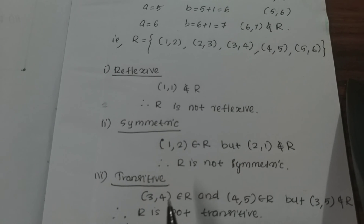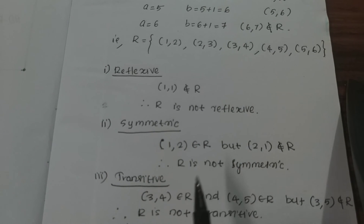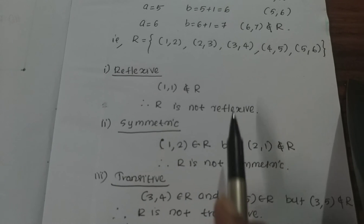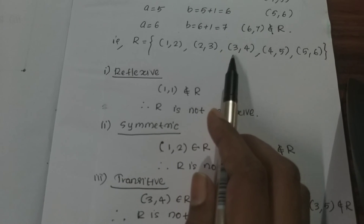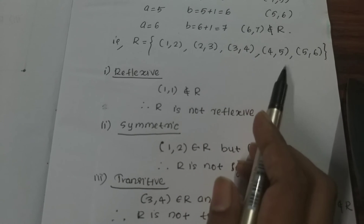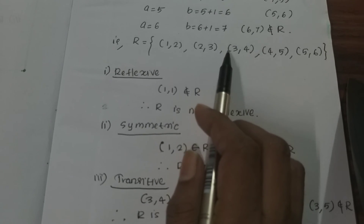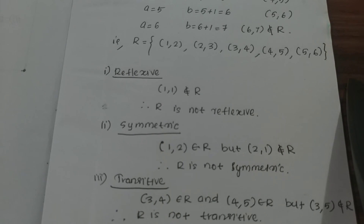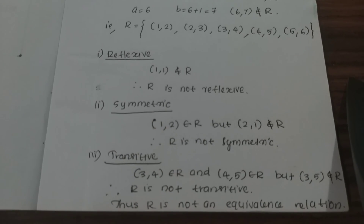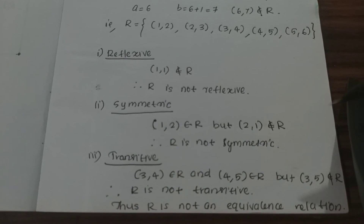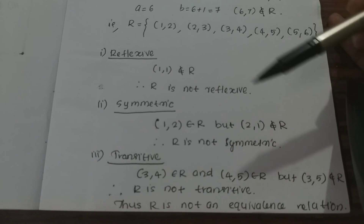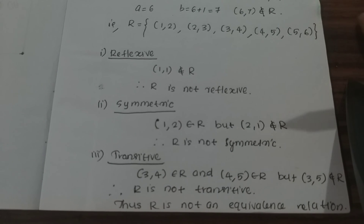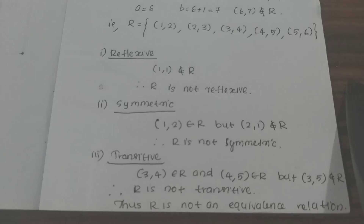The third property is transitive. We check: (3,4) and (4,5) both belong to R. For transitivity, (3,5) should belong to R, but (3,5) is not in R. So R is not transitive. Therefore, R is not an equivalence relation.